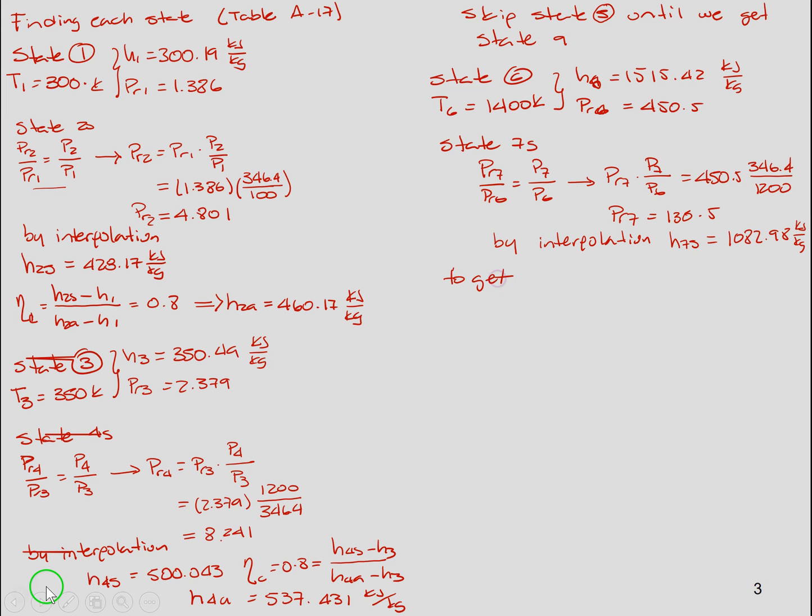By interpolation we get h7s equal to 1082.98 kilojoules per kilogram. Now to get state 7a, in order to get the actual state that is 7a, we use the definition of the isentropic efficiency of the turbine. By solving for h7a, we got 1169.97 kilojoules per kilogram. Remember that the efficiency of the turbine is 0.8. So we can repeat the same procedure for the second turbine.